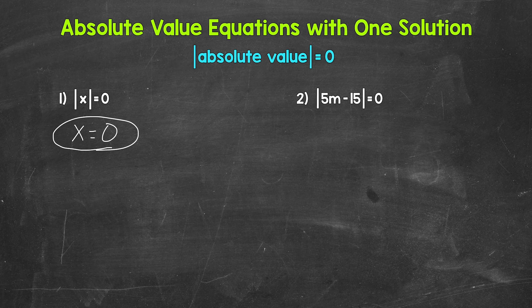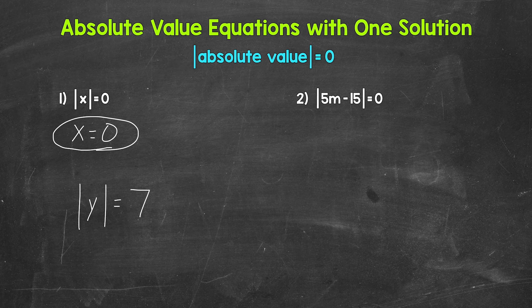Let's compare that to another example. Let's say we have the absolute value of y equals seven. Now here we have two possibilities, two solutions. Y can equal seven, or y can equal negative seven. The absolute value of seven is seven, and the absolute value of negative seven is seven. So y equals seven, or y equals negative seven.